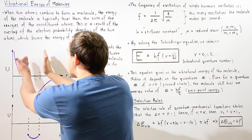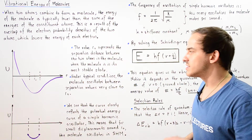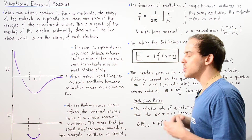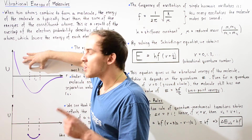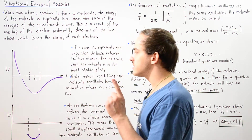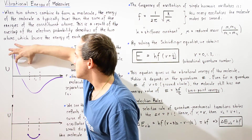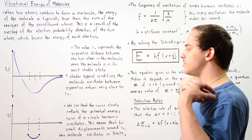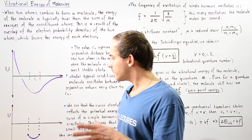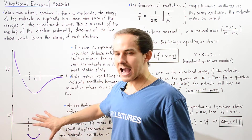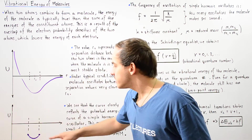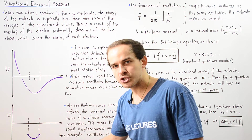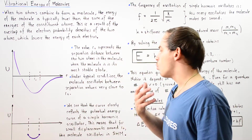If we examine this curve, there is a very high probability that our separation distance is within a certain region close to R-naught, while there is a very low probability that the separation distance is far from that region. So this represents the most likely separation distance within our diatomic molecule.